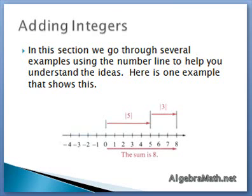Next, we add an arrow showing three. Its distance is the absolute value of three. So what's the sum? Well, five plus three is eight.